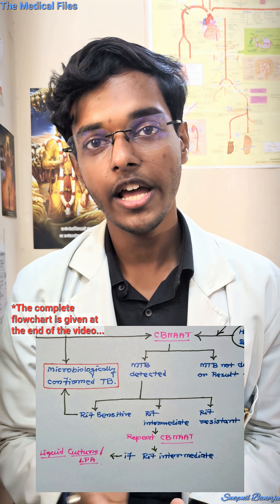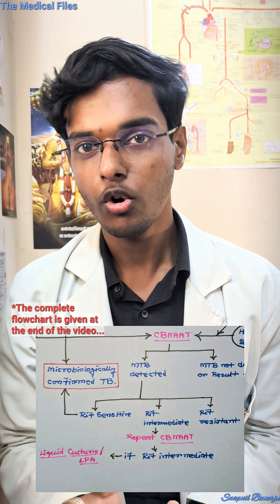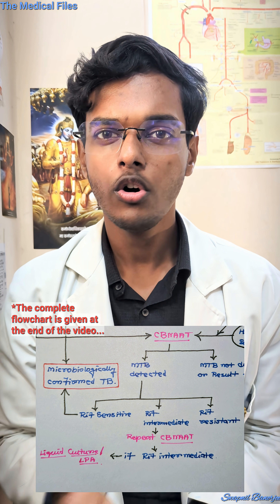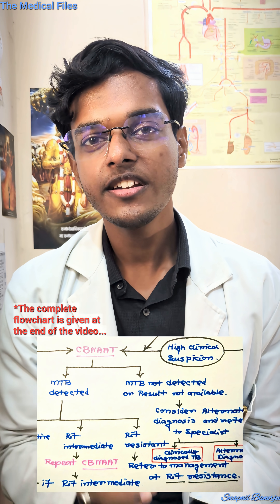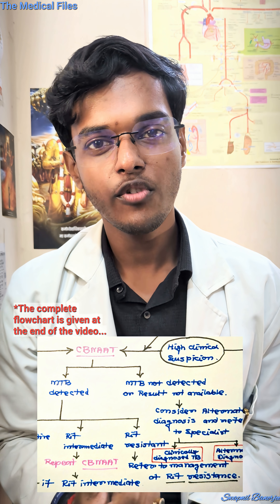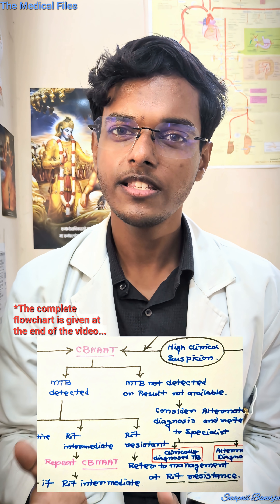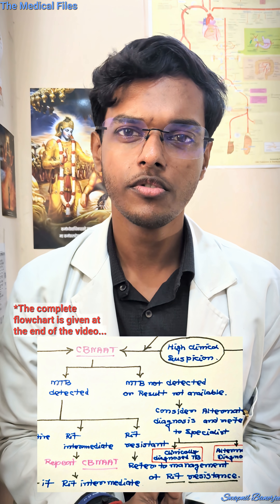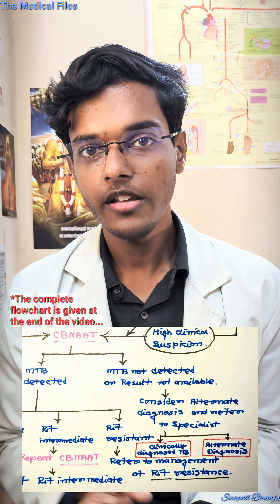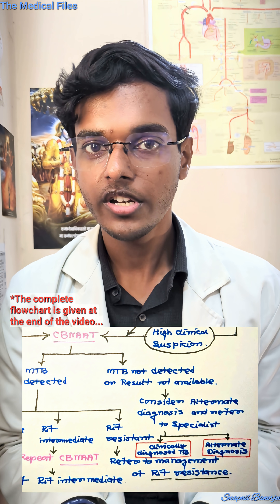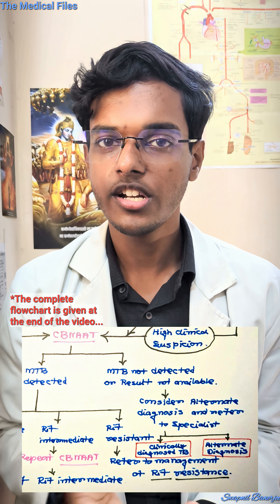If the repeated CB NAAT result is also coming back intermediate, we shall go for line probe assay (LPA) or liquid culture. If the patient is resistant for rifampicin, we shall consider treatment regimens that do not include rifampicin.